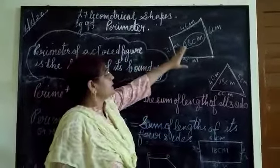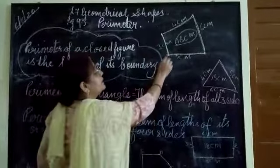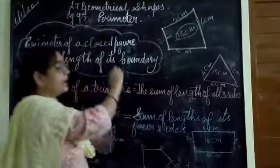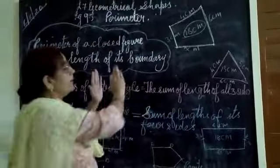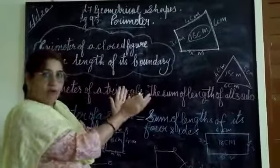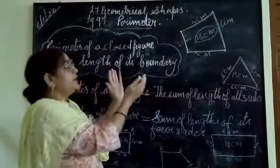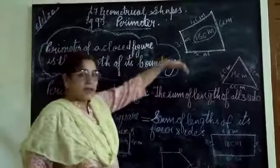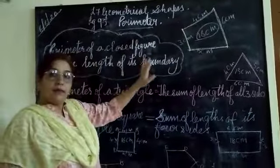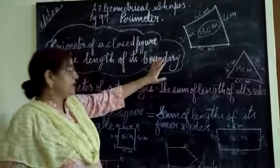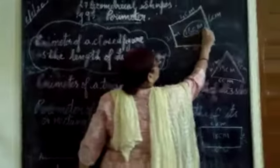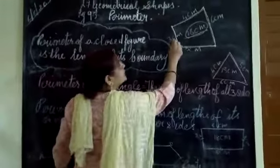Any figure — it can be different length and it can be different shape. But the total sum of the figure, all the sides — that boundary is called the perimeter. So, the perimeter of this figure is 18 centimetres: 3 plus 4 plus 6 plus 5 is 18 centimetres.